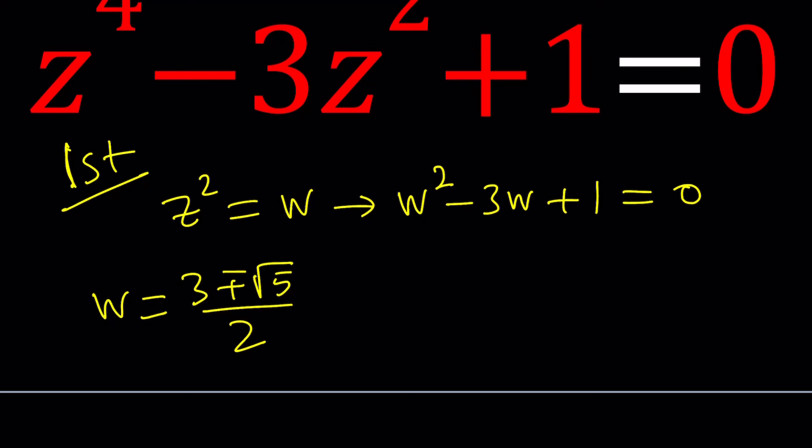So z is going to be equal to square root of w, but there are two square roots of a complex number. And we have two values for w which means you're going to have four z values.